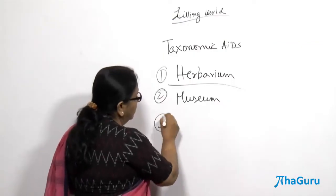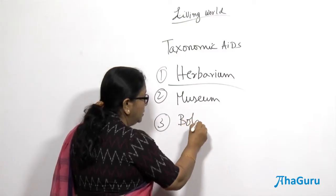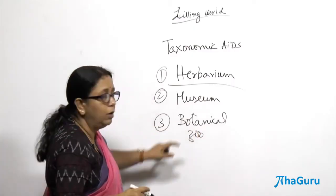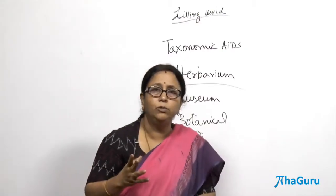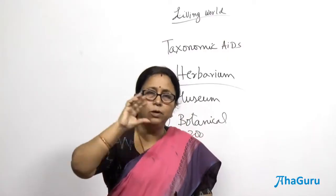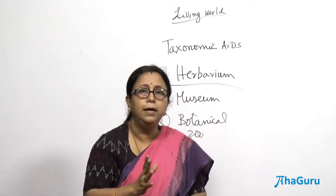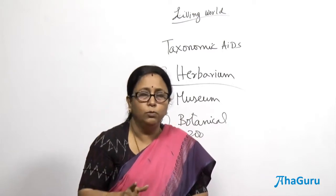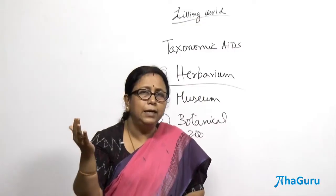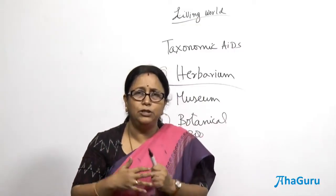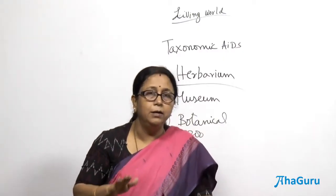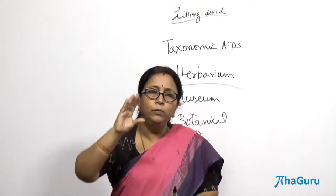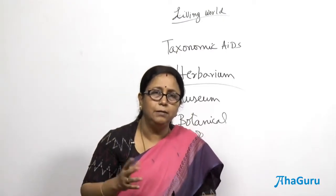Apart from museums, there are botanical gardens and zoological gardens or zoological parks — these two are also taxonomical aids. In botanical gardens, plants are grown and labeled. Every plant you see in a botanical garden will be labeled very clearly with its genus name and species name. Similarly in a zoo, they try to provide as much natural habitat as possible, but all the animals are under human care. The labels there will also act as a taxonomical aid.